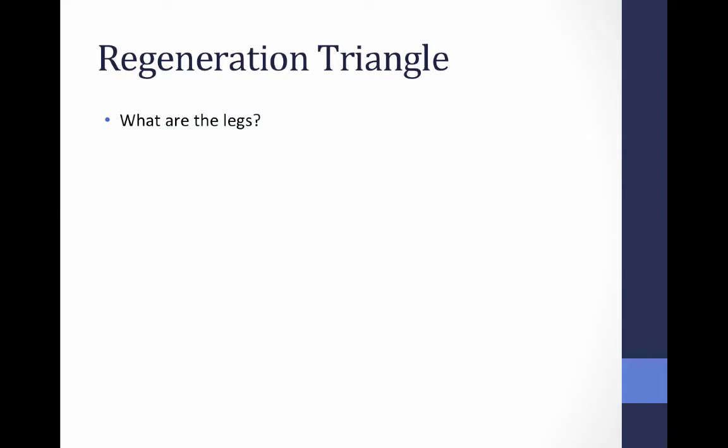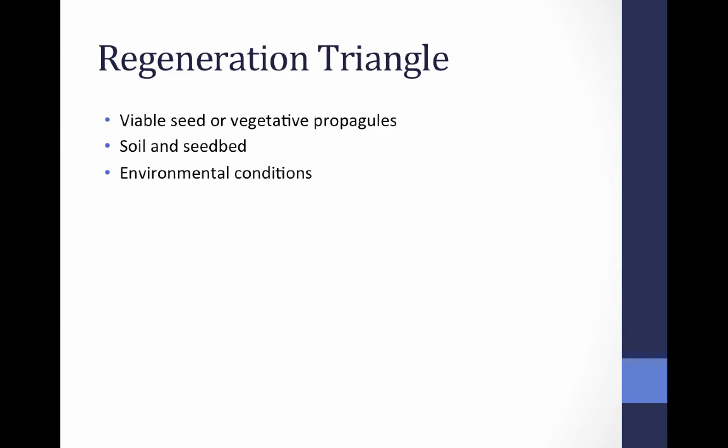Remember, we talked about the regeneration triangle — pause this and write down what the legs are. The three legs are: viable seed or vegetative propagules, the soil and seedbed, and the environmental conditions.